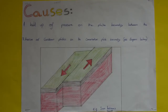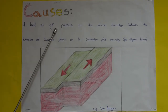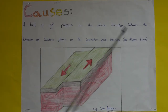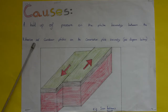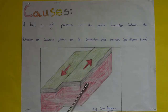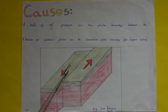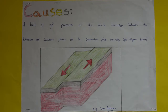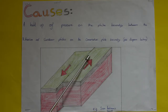The earthquake was caused by a buildup of pressure on the conservative plate boundary between the North American and Caribbean plates. A conservative plate boundary is where two plates slide past each other in opposite directions. Earthquakes are caused when the plates get stuck and pressure builds. An example of a conservative plate boundary is the San Andreas Fault in America.